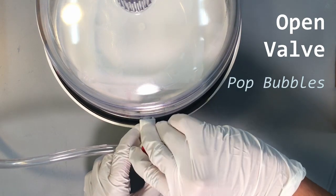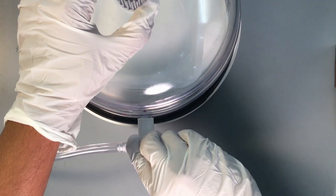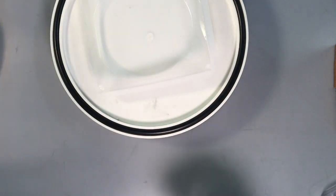After 5 minutes, open and close the valve suddenly to pop the bubbles in the mixture. Repeat this until all bubbles have popped. Release pressure in the desiccator and remove your weighing tray. Check for any remaining bubbles.